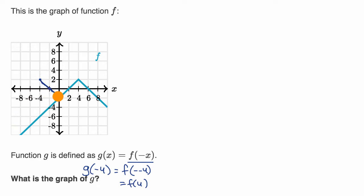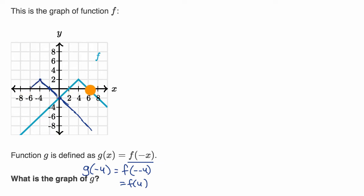We've already talked about it in previous videos: if you replace your x with a negative x, you're essentially reflecting over the y-axis. So g is going to look something like this. g of negative six would be the same thing as f of six. And so that would be the graph of g — you'd pick the choice that gives a reflection over the y-axis.